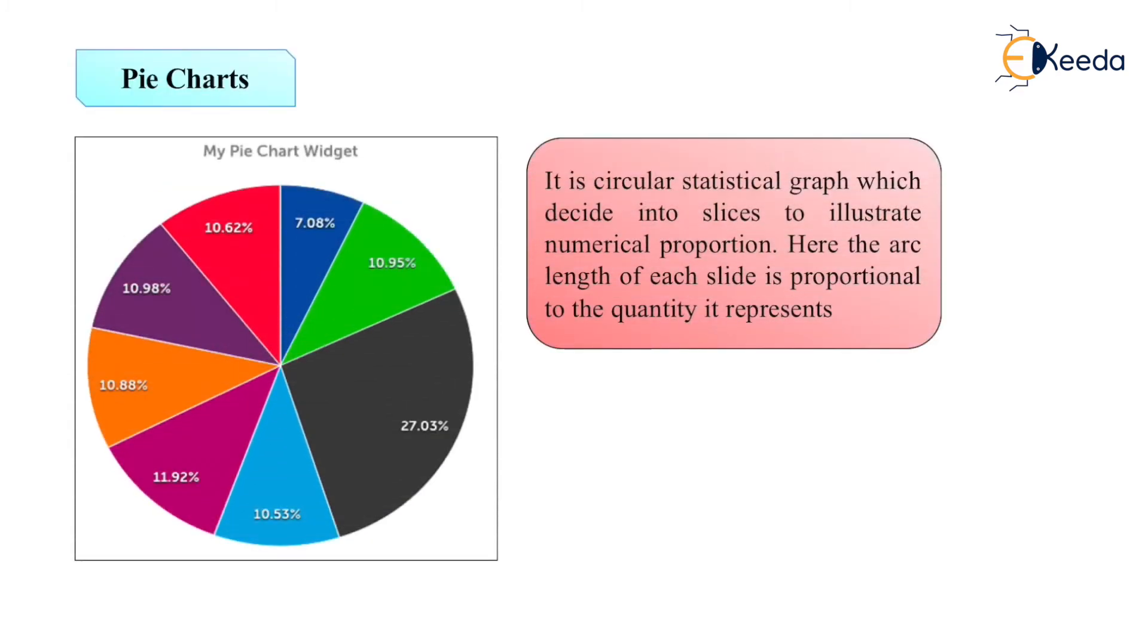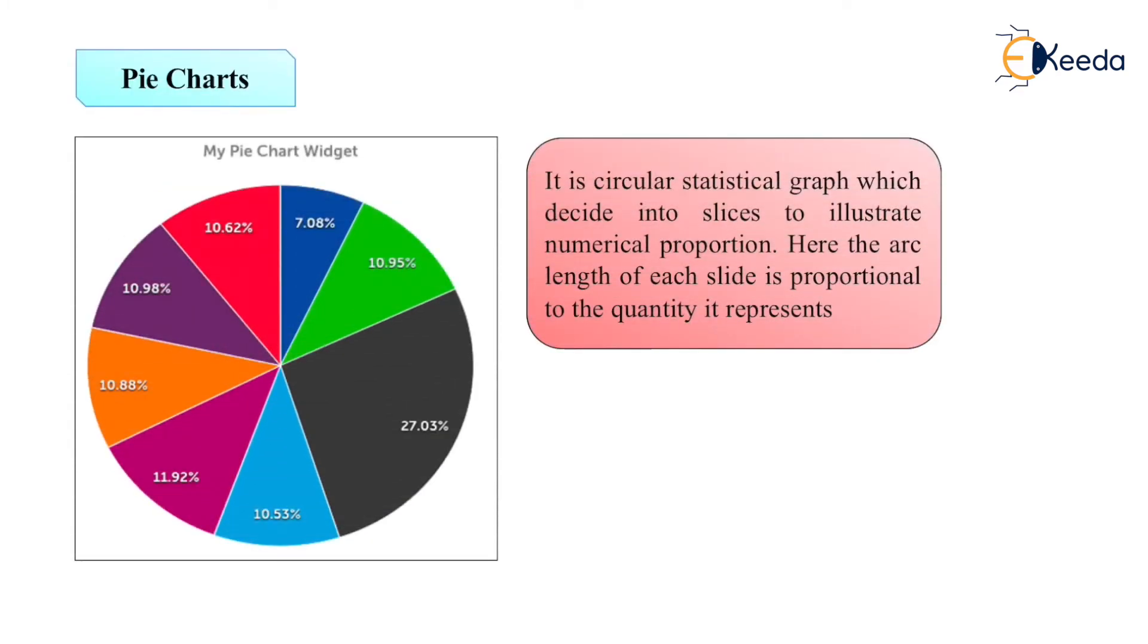Next is pie chart. Pie chart is a circular statistical graph, which is divided into slices to illustrate the numerical proportion. The arc length of each slice is proportional to the quantity it represents. It depends on the quantity, how its quantity is represented. Everything you can represent in values also and percentage also.